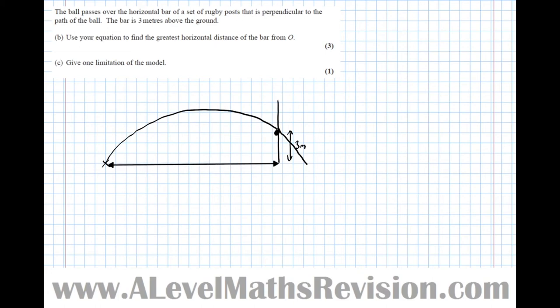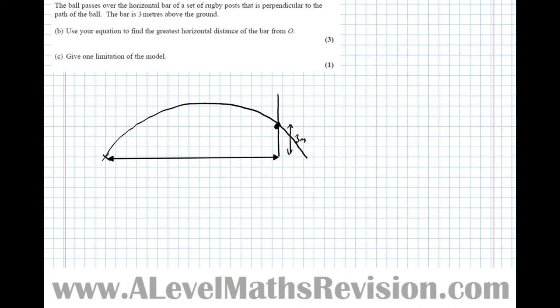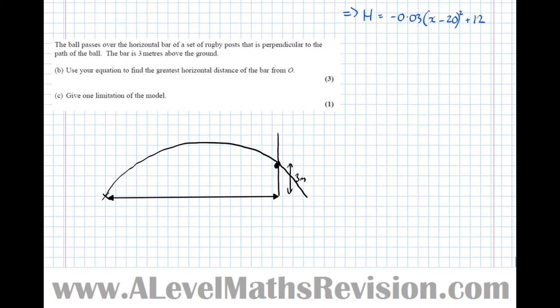So it's a simple case of just subbing y equals 3 into the quadratic to find the x distance when the ball is at 3 metres. So it's just really a case of setting the y value of the quadratic, or in this case the h value of the quadratic to be 3.